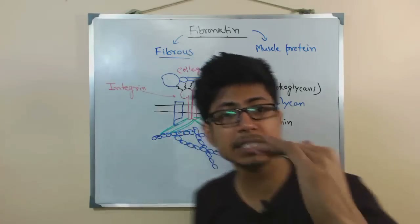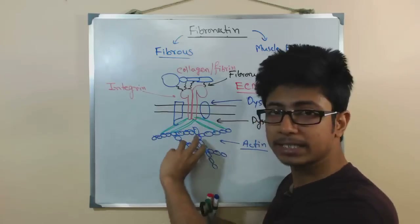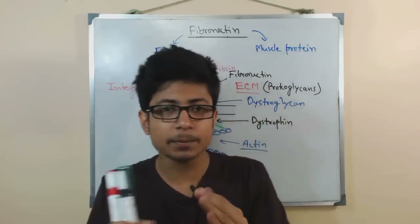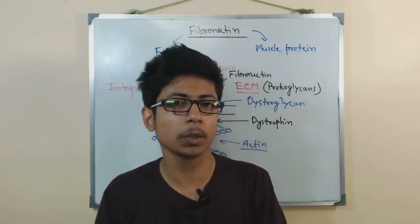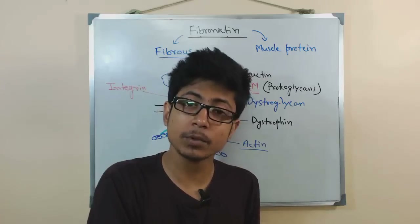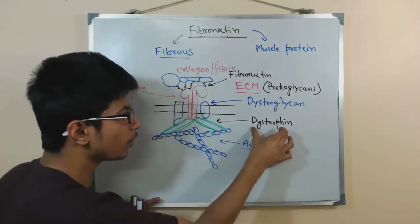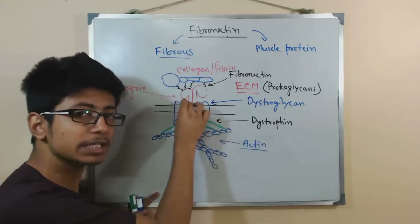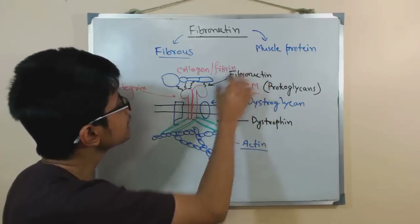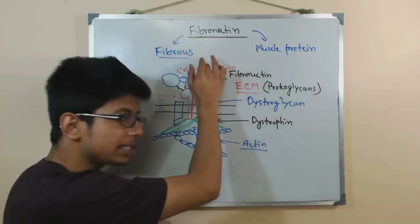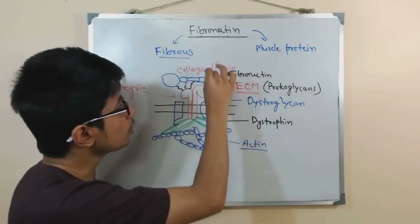Integrin acts as an intermediate protein channel embedded in the cell membrane, connecting intracellular and extracellular components. Since integrin is embedded, it needs linker proteins to connect with cytoskeletal proteins as well as extracellular matrix proteins. Dystrophin links actin filaments to integrin, while fibronectin acts as the protein that connects integrin with extracellular matrix proteins like fibrin and collagen.